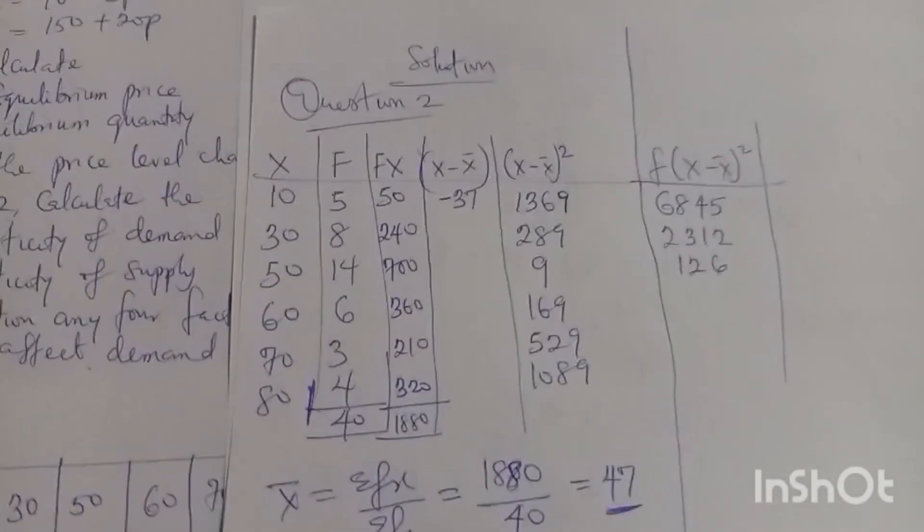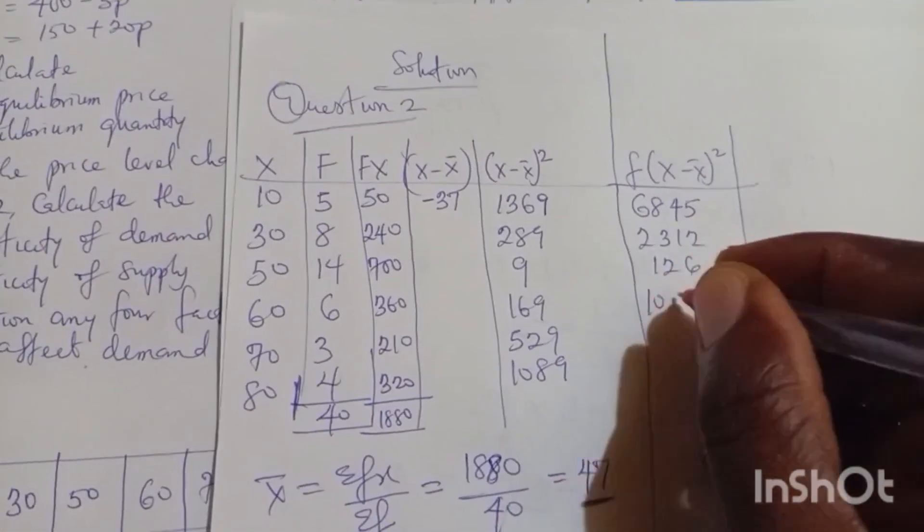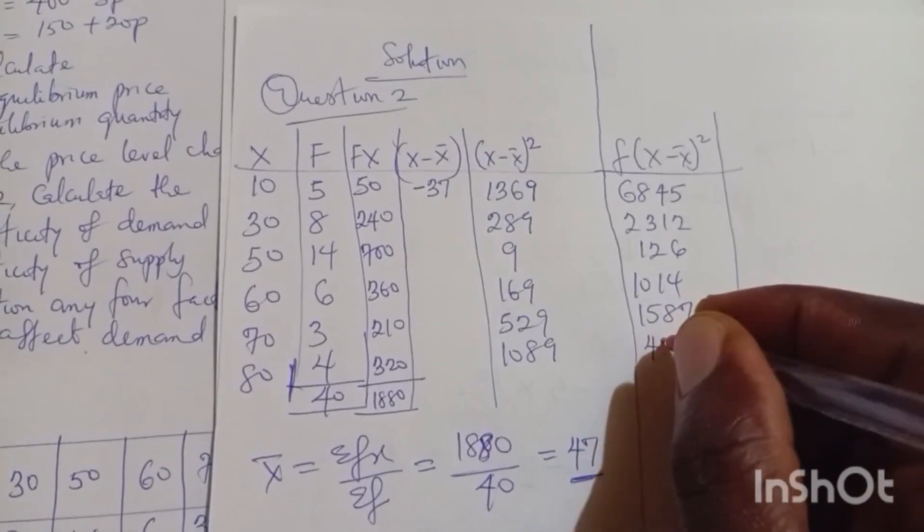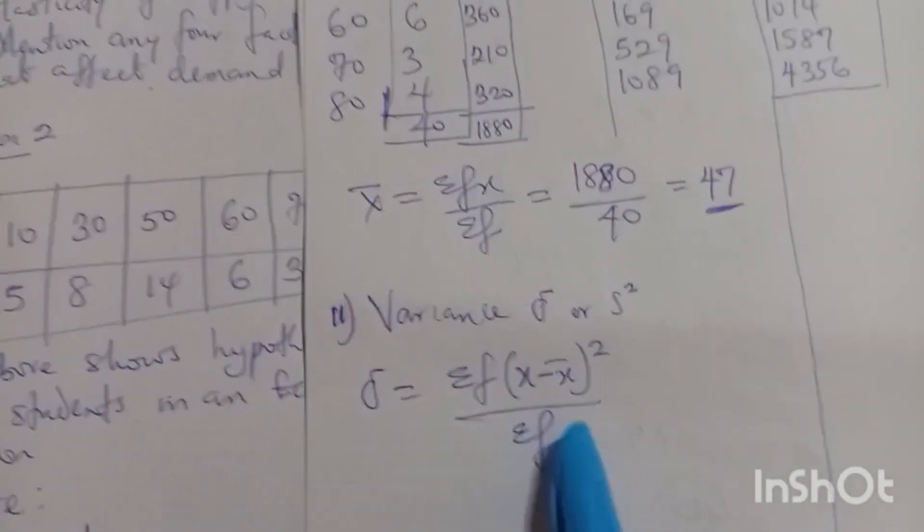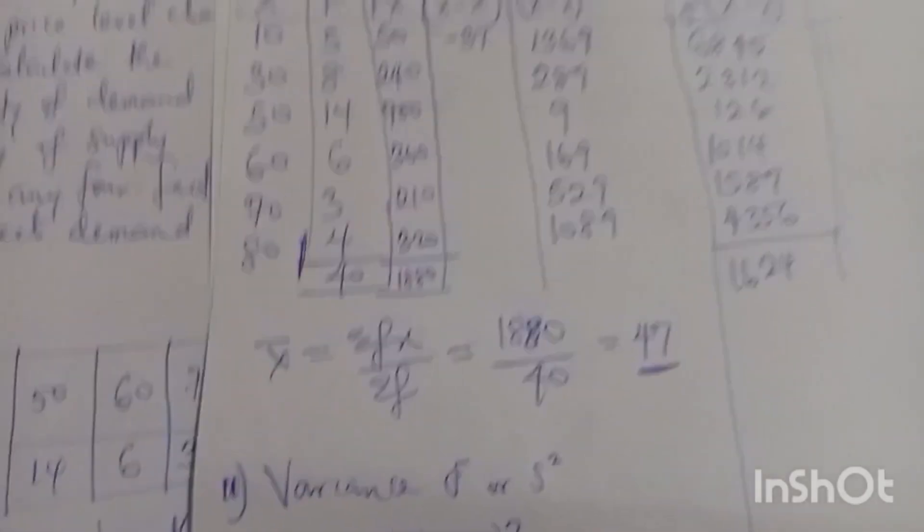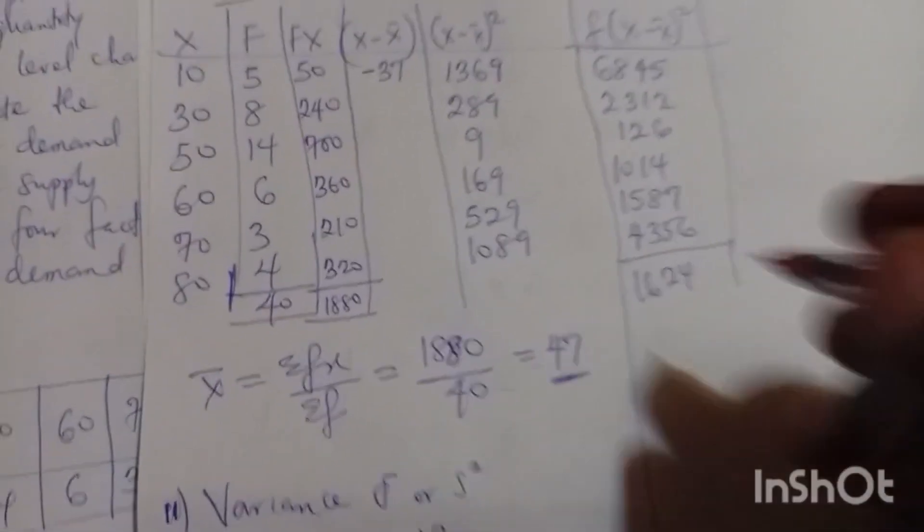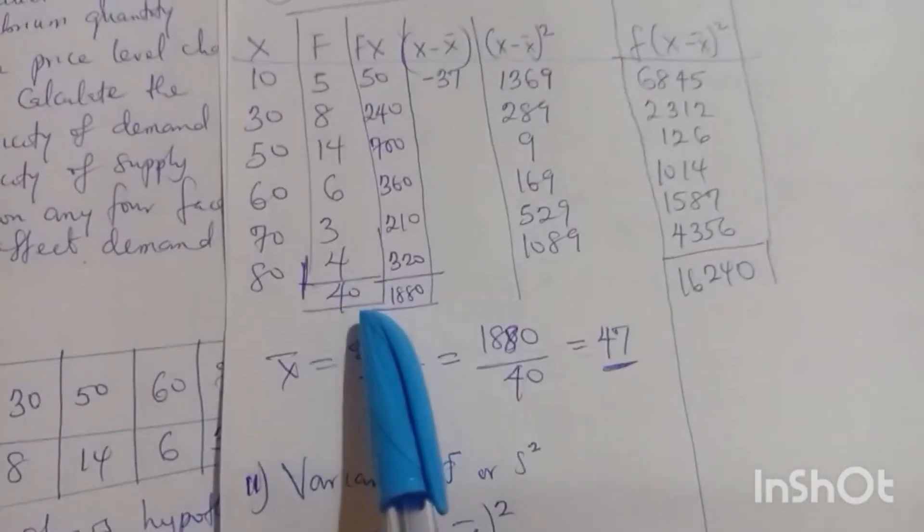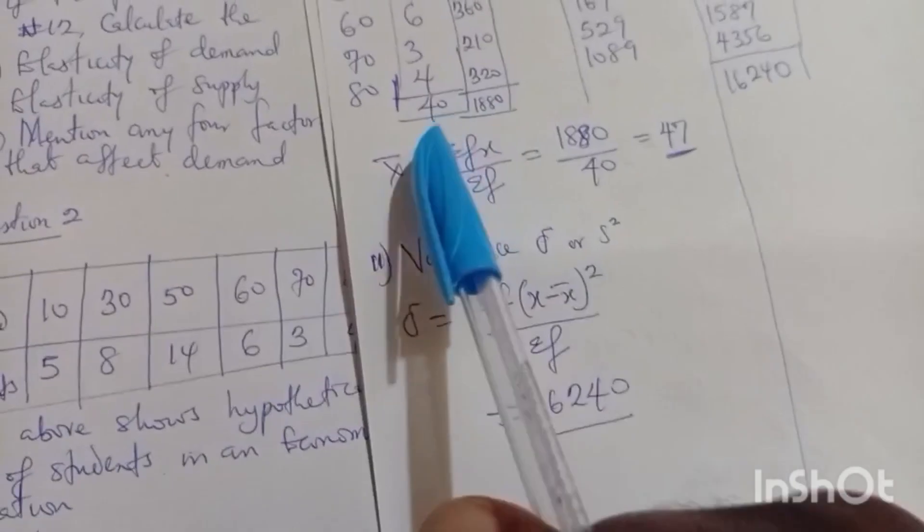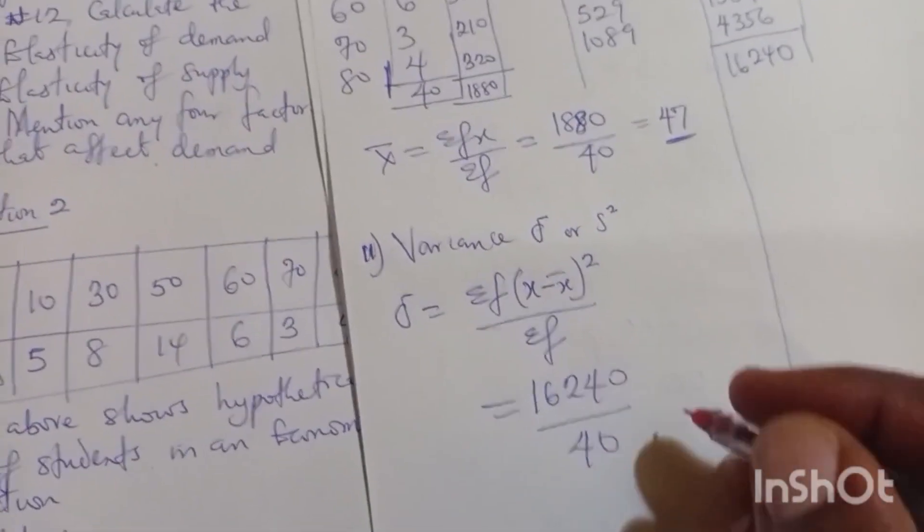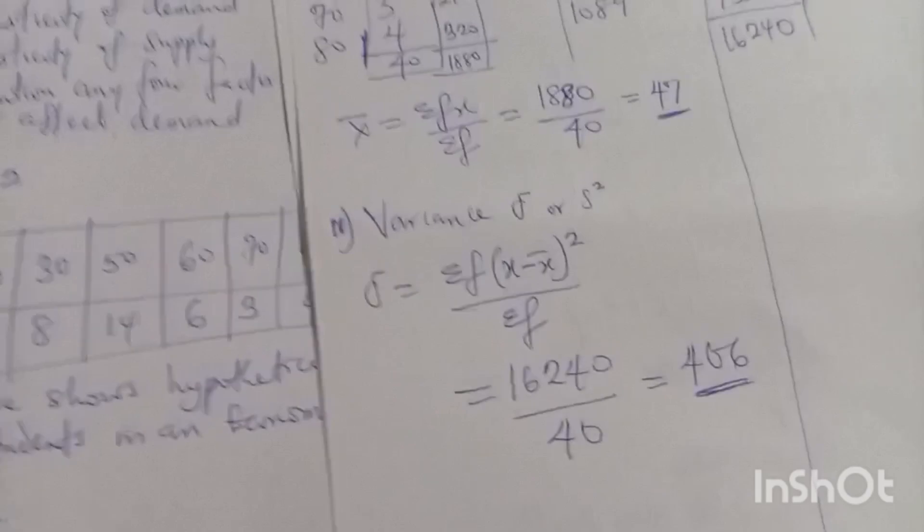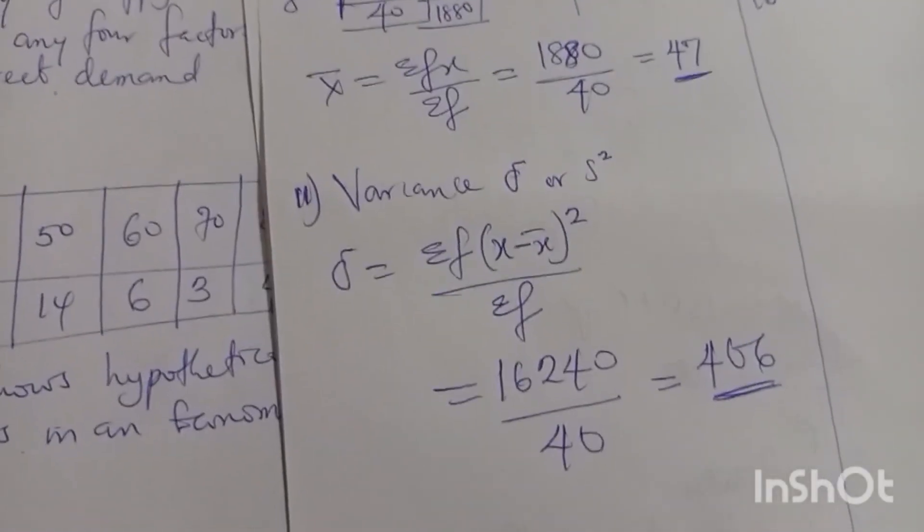For F times each value: I have 2312, I have 1014, I have 1587, I have 4356. Sum it up. When I sum it up, I have 16240, and my summation F is 40. Which means variance equals 16240 divided by 40. If you press your calculator very well, you will get an answer. What will you get? You get 406.